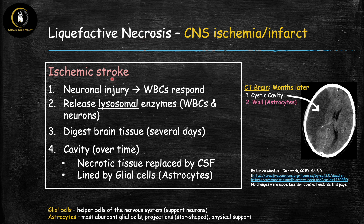In ischemic stroke, decreased blood flow to the brain injures neurons. White blood cells respond to the area of injury, and there is release of lysosomal enzymes both from the responding white blood cells and from the dying neurons. These lysosomal enzymes are free in the environment to digest brain tissue. This process takes several days, but as digestion occurs the brain tissue is slowly chewed away, leading over time to formation of a cavity — an empty space — that gets replaced by cerebrospinal fluid.